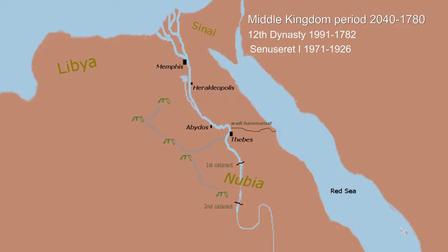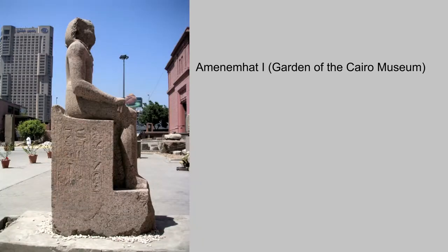When Senusret the First heard about the coup in the palace, he rushed home from the war in the western desert against the Libyans, put down the coup, and became the next pharaoh. There are two great scripts left from the time of Senusret the First. The first appears to be written by Amenemhat to his son — a letter saying essentially 'trust no one,' giving several reasons, the main one being that on the day you die nobody will be there with you. The other script is the story of a young slave named Sinu who was in Thebes, heard of the plot to kill King Amenemhat the First, and fled into the Sinai desert to the mines so he would not be caught up in it.